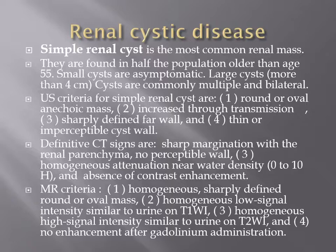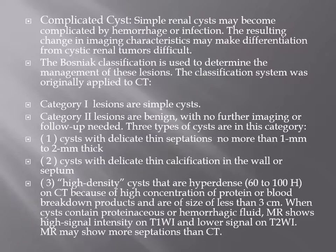Simple renal cysts are the most common renal mass, usually occurring in patients over 55 years old. Large cysts over 4 cm are commonly multiple and bilateral. Ultrasound criteria include a rounded or oval anechoic mass with increased through-transmission, a sharply defined far wall, and imperceptible cyst wall. On CT, density is 0 to 10 Hounsfield units. A complicated cyst may be due to infected simple cysts, hemorrhagic cysts, or cystic degeneration of a tumor. The Bosniak classification is based on CT criteria.